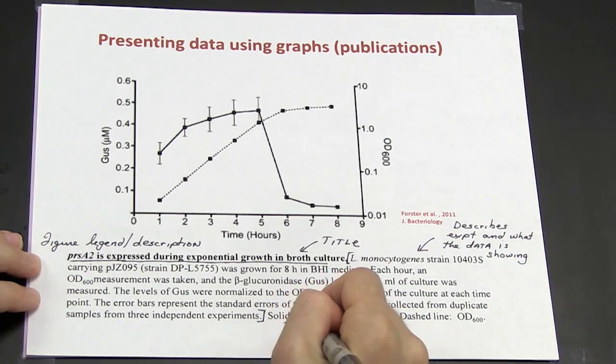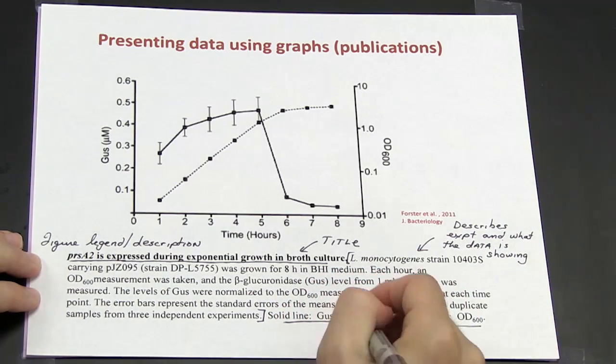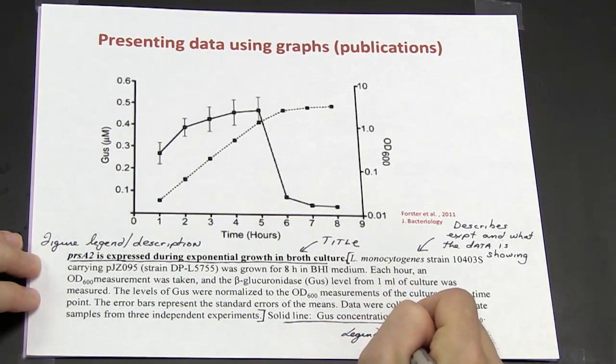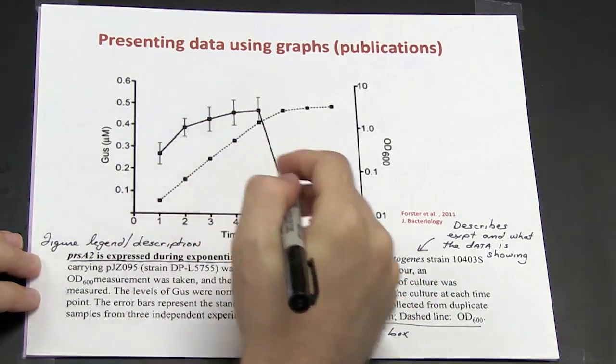The last sentence is what we would refer to as the legend box, where you define what each of the lines represents.